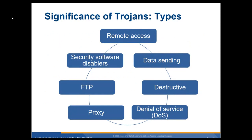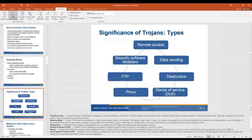Trojans — a remote access Trojan is designed to give an attacker control over the system. Well-known examples include Sakula, KW worm, Harvex, and Dark Comet, which you'll actually use in one of your labs. These typically work in two components: a client and a server. Security software disablers will disable your security software. Some Trojan attacks set you up as an FTP server so files can be transferred from you, or as a proxy server so they can pass traffic through you.